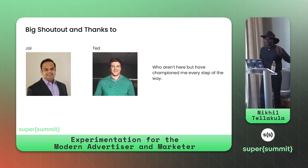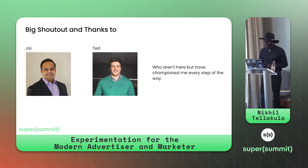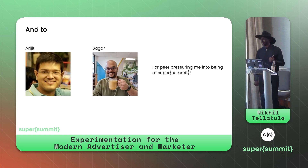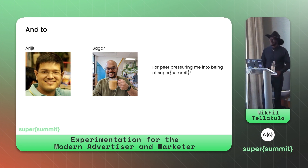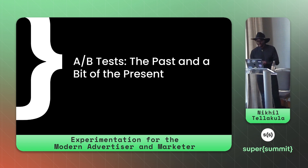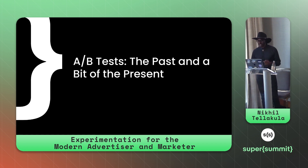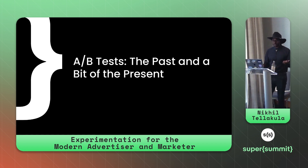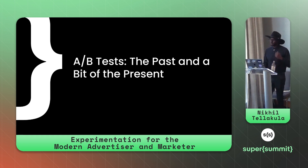First and foremost, a big shout out to my bosses Jay and Ted, who championed me every step of the way, and to Sagarjit who peer-pressured me into coming to Super Sunday. For context, it's important to look at the historical method of testing in advertising. We borrow an idea from clinical trials — randomized control trials — which in the advertising and marketing world translates to A/B tests with Group A and Group B.